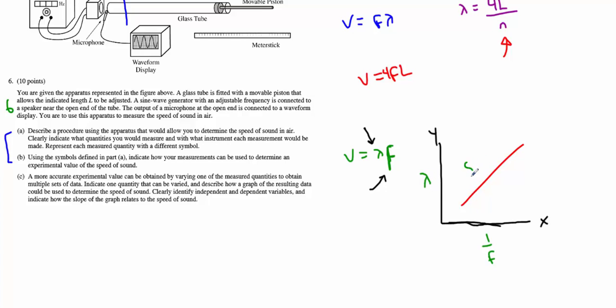And so my X dimension will be one over F, and my Y dimension will be lambda, such that then my slope will equal my rise, my lambda, over my run, my frequency. And when I divide by one over F, it's the same thing as multiplying my reciprocal. Hence, the slope will indeed be the speed of sound.